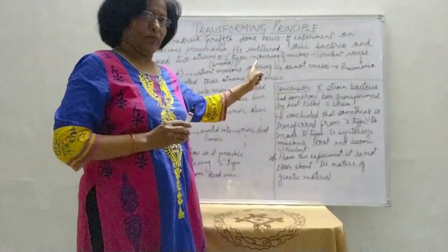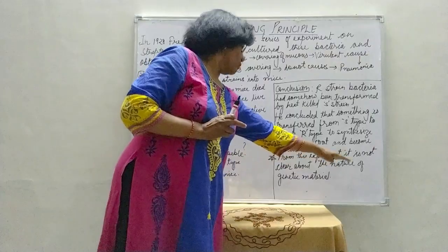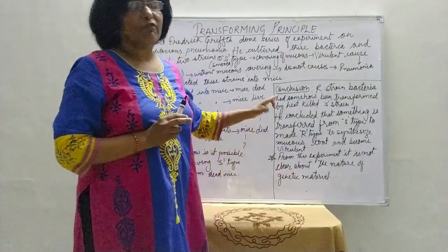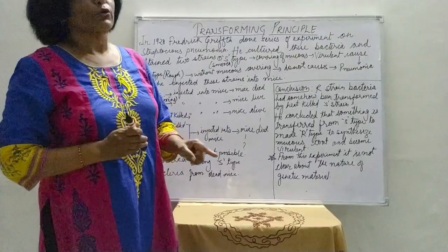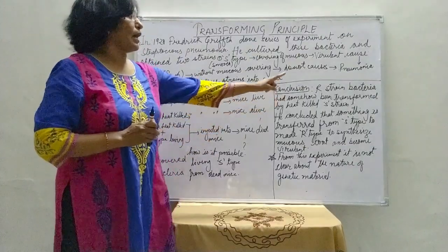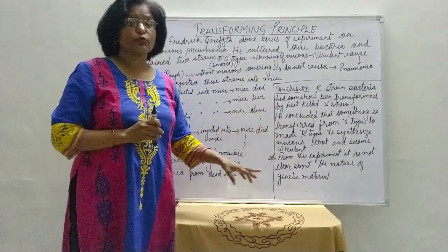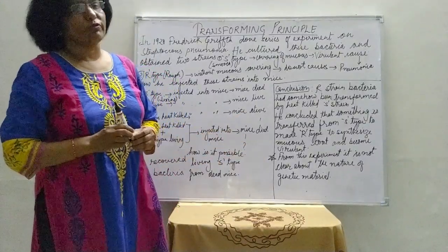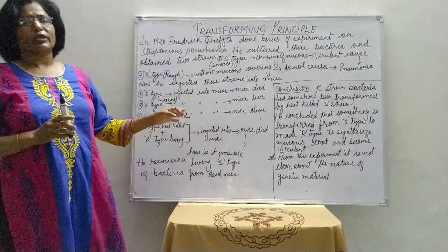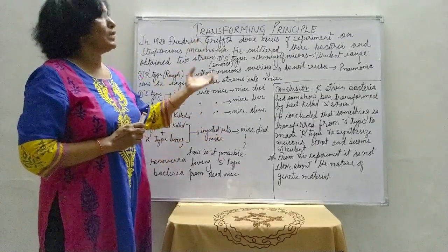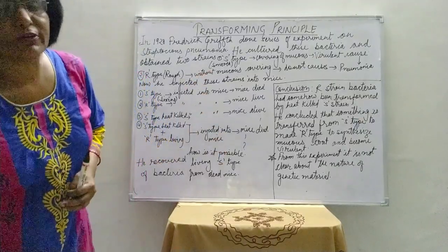From this experiment, it was not clear about the nature of the genetic material. Griffith was not able to determine whether DNA, RNA, or protein had given the instruction to make the R strain form the polysaccharide covering. He was not able to give the appropriate answer about which molecule is the genetic material responsible for transferring the characters.